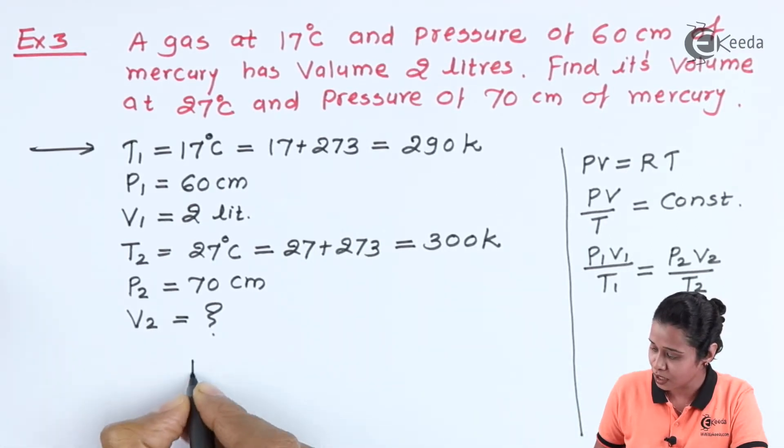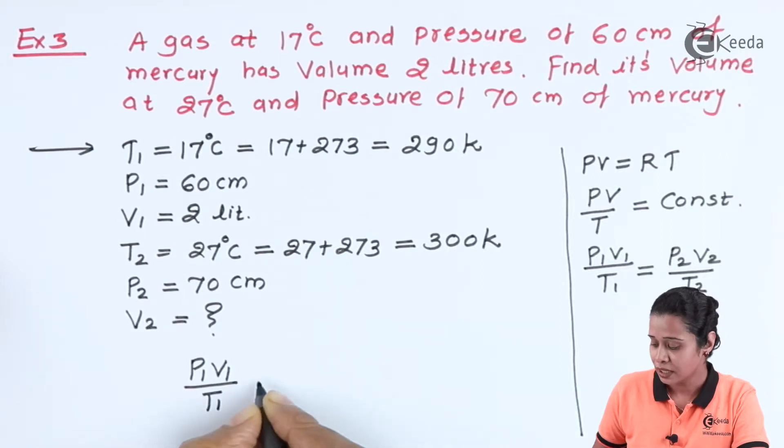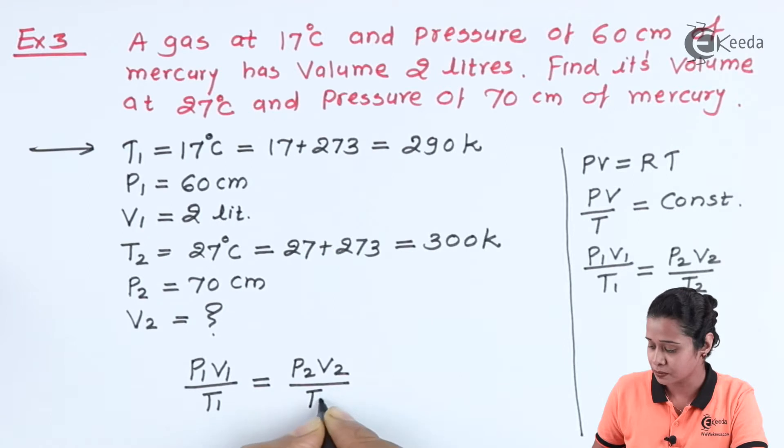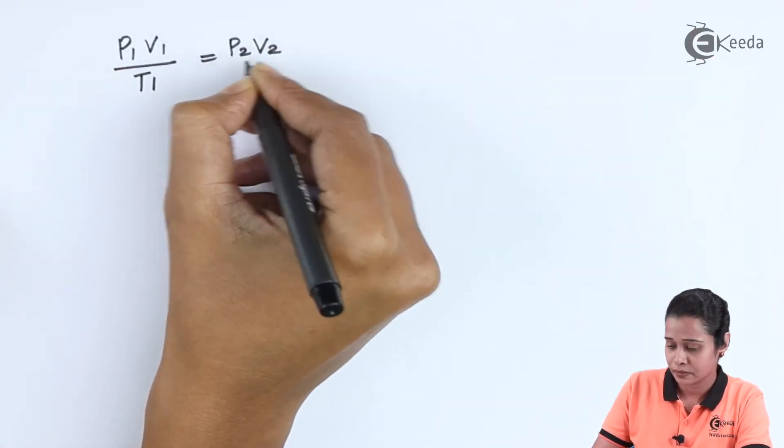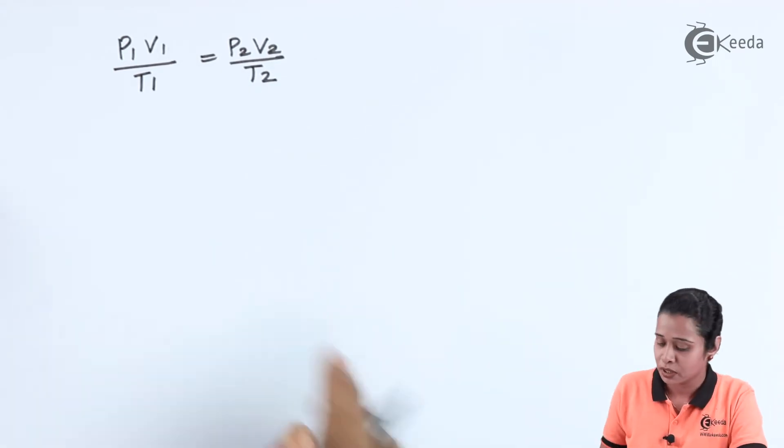Now, this formula we are going to use in the given problem. So let us start with the formula, that is P1 V1 upon T1 is equal to P2 V2 by T2. Here we have to find out volume at different temperature and pressure.